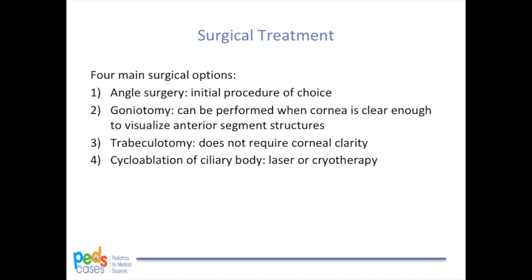There are four major surgical options for primary congenital glaucoma. Early angle surgery is considered the mainstay of treatment with high success rates in patients treated before one to two years old. Goniotomy is preferred when the cornea is clear enough to visualize anterior segment structures. Trabeculectomy is the procedure of choice when the cornea is not clear enough to visualize the angle, but this has the technical challenge of locating Schlemm's canal. Cycloablation of the ciliary body with laser or cryotherapy may be used in difficult-to-treat cases. In terms of follow-up, patients require frequent follow-up in the short term to monitor for infection or excessive inflammation, and in the long term require lifelong serial measurements of intraocular pressure, corneal diameter, refractive error, and optic nerve cupping.